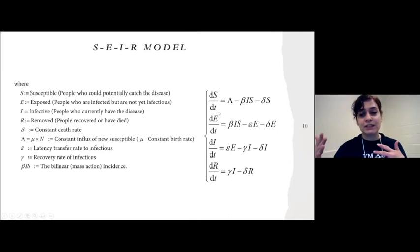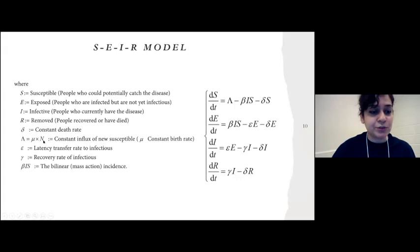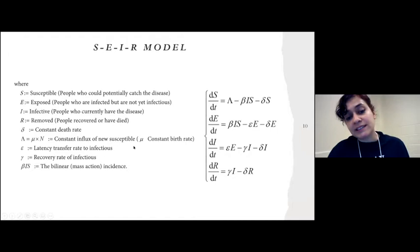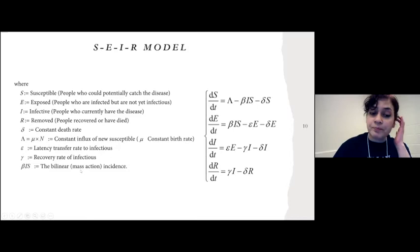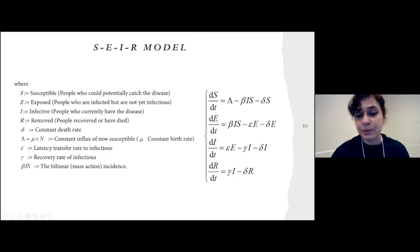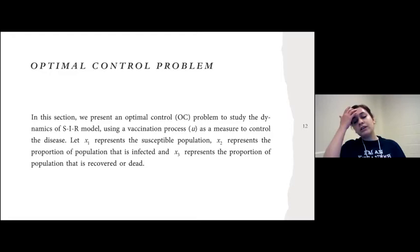This four-compartment SEIR model includes a parameter mu*N, which is the constant rate of new susceptibles, mu being the constant birth rate. A new parameter here is the latency transfer rate to infectious, and beta represents bilinear incidence or mass action. These are the parameters we work with before moving to the optimal control formulation.